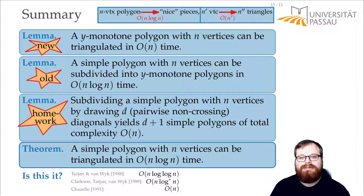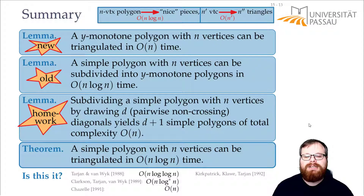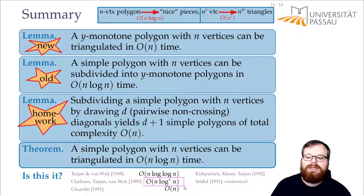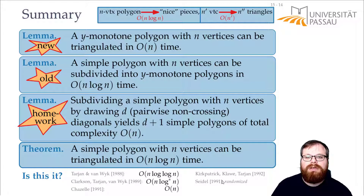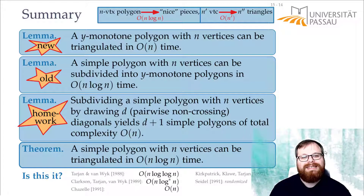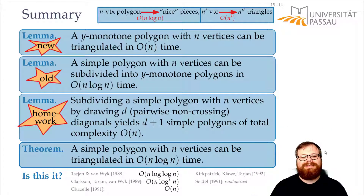These are all combinatorial algorithms, but there are also randomized algorithms that are much simpler. In 1992, a randomized algorithm was found with expected running time O(n log log n). Raimund Seidel in 1991 found a randomized algorithm achieving expected O(n log* n) time. Those are much simpler, but the running time is only an expected bound, not a worst-case upper bound. Anyway, I hope you found some interest in guarding art galleries and triangulating polygons, and I'll see you again next week.